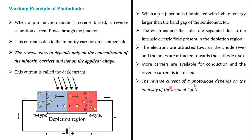The reverse current depends on the intensity of incident light. If we increase the intensity, we observe that the reverse current increases. So we can conclude that reverse current is proportional to the intensity of incident light.